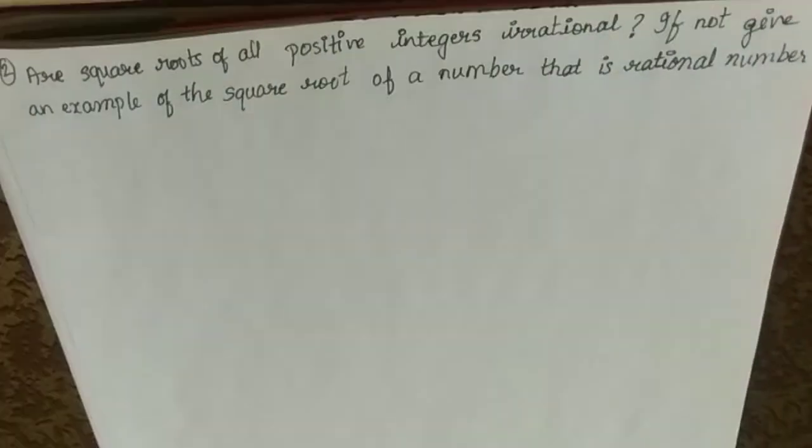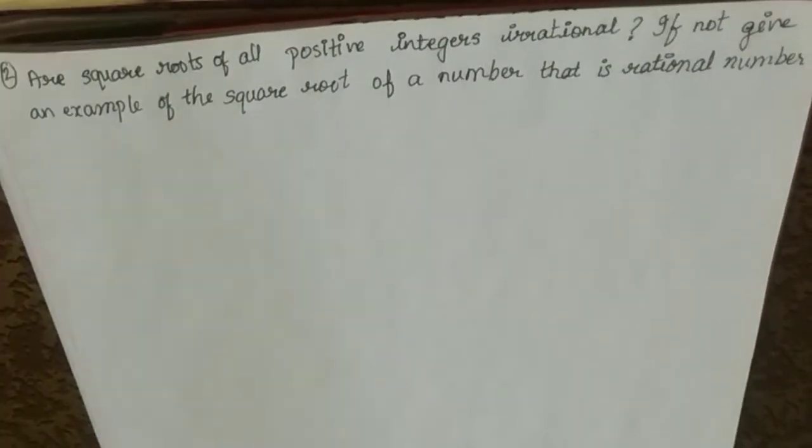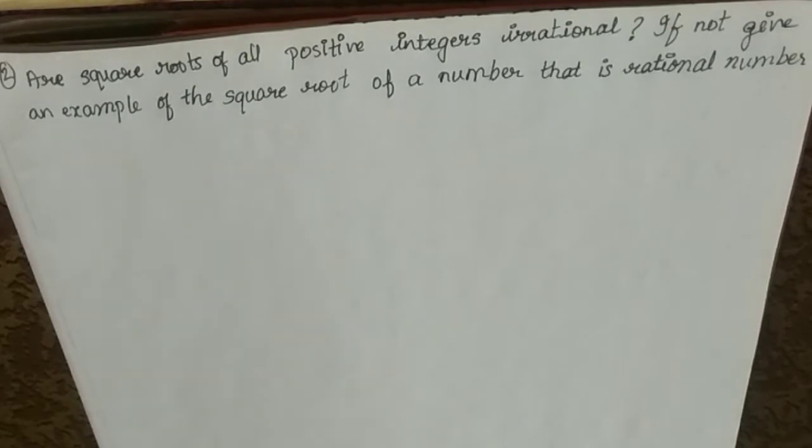So today I am back with the second question of chapter 1, number system in NCERT class 9. This is of exercise 1.2. Are square roots of all positive numbers irrational? If not, give an example of the square root of a number that is rational.